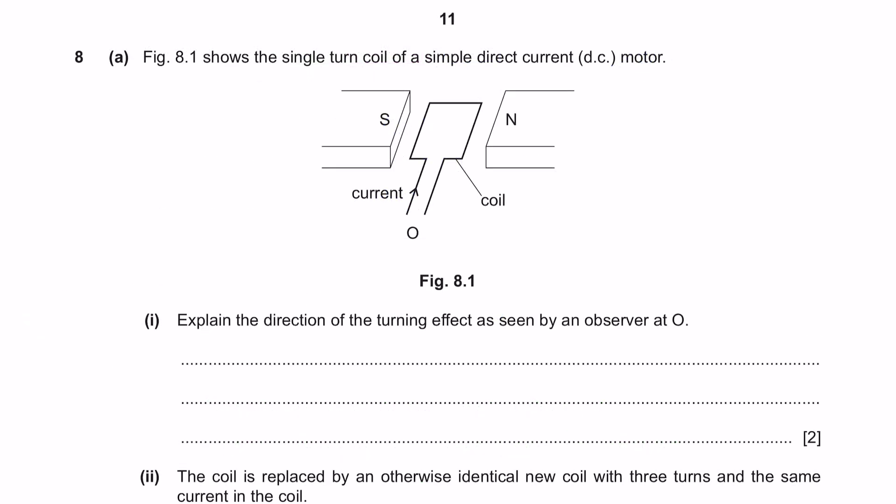Question 8 Part A. Figure 8.1 shows the single turn coil of a simple direct current DC motor. When the question is discussing DC motor, the first rule that you have to remember is we are going to be applying the left-hand Fleming rule. The right-hand rule will be for an AC generator. Part 1, explain the direction of the turning effect as seen by an observer at O. As we can see, the current is flowing in this direction. It will flow in this direction and then come back this way. The current flows inwards on the left-hand side and outwards on the right-hand side.